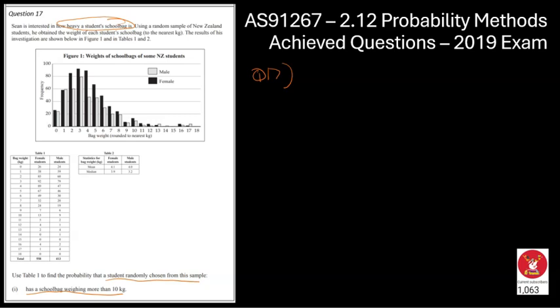So let's start off with the probability notation. We're trying to find the probability that x, x being the bag weight, is greater than 10 kilograms. And this question looks really messy but it is really a simple f over t type question. So we're going to start off with the total. How many students are there in total? And they're given that to us down the bottom there. So there are the total males and there are the total females.